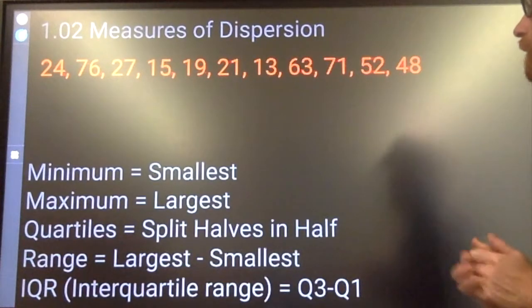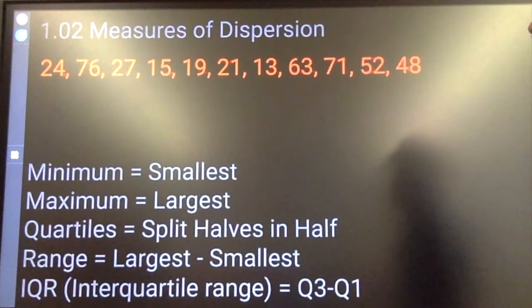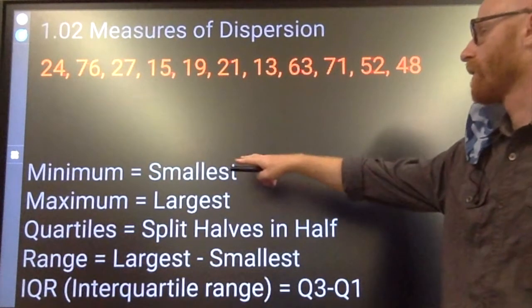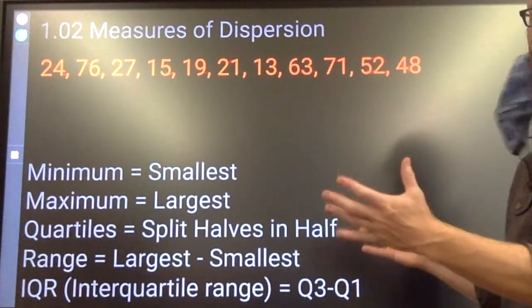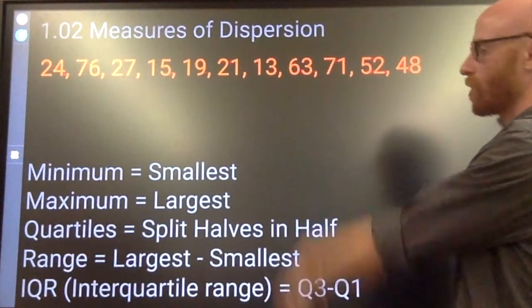Measures of dispersion, talking about how data is spread out. So, minimum smallest number, maximum largest number, they're pretty easy to find. Quartiles split the halves in half, I'll show you how that works.